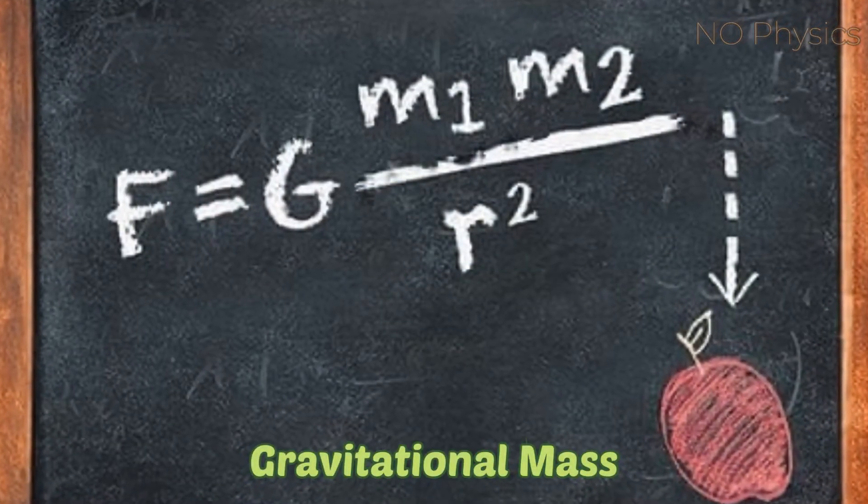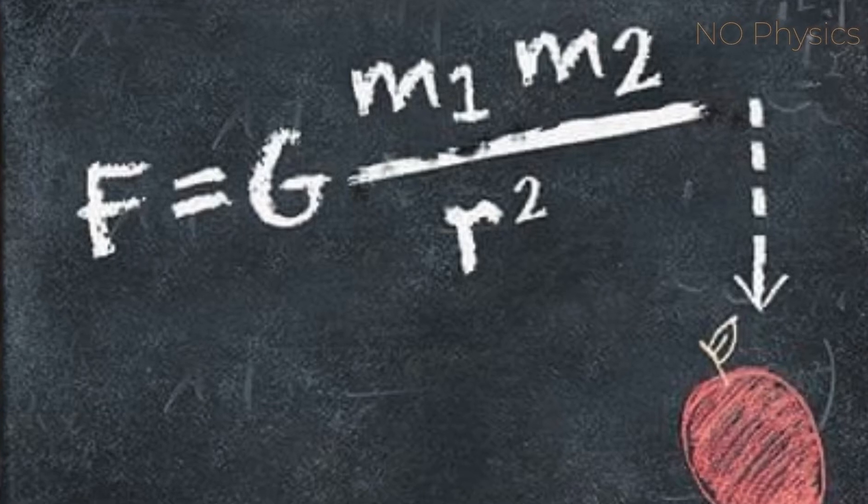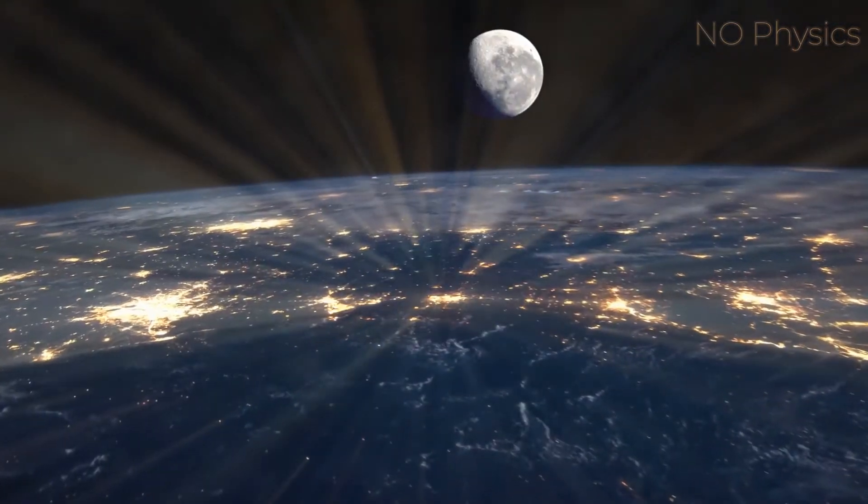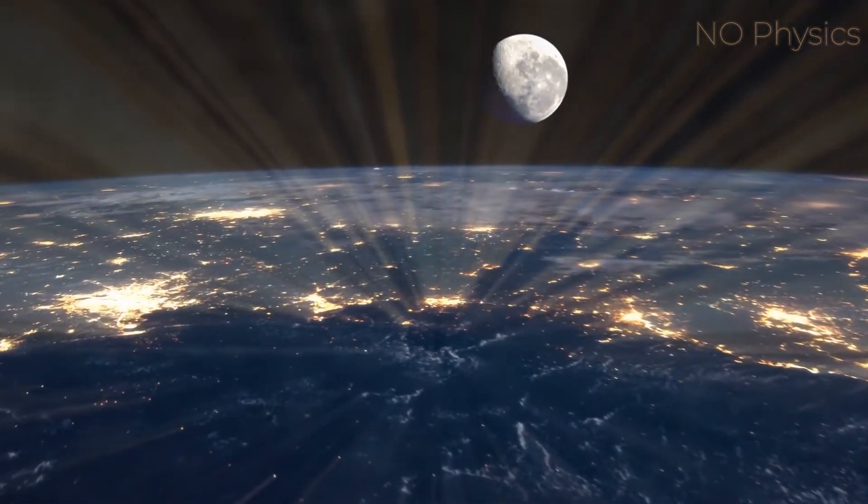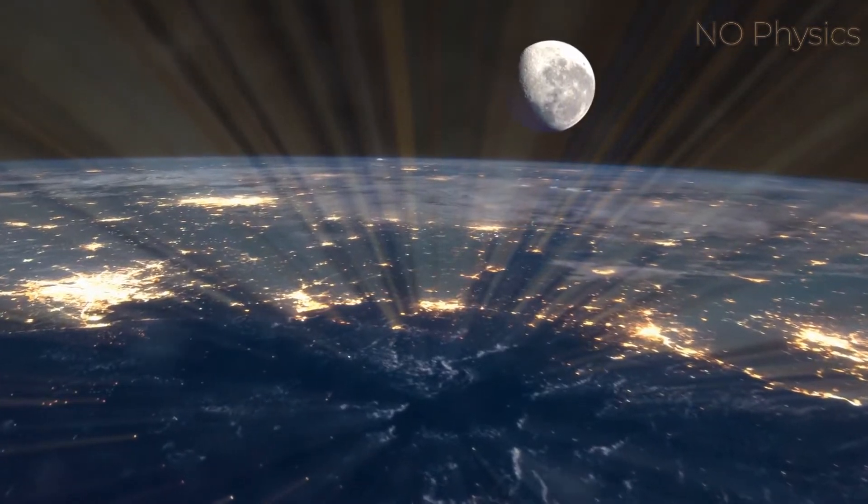The other was gravitational mass, which is described by Newton's universal law of gravitation. Gravitational mass is defined by how strong an attractive force it exerts on other objects.